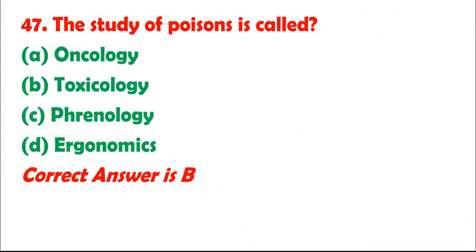Question 47: The study of poisons is called: A. Oncology. B. Toxicology. C. Phrenology. D. Ergonomics. Correct answer is B.